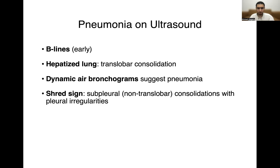There's another sign I want to introduce, called the shred sign, which is actually characteristic of pneumonia. The shred sign is when you see subpleural consolidations with pleural irregularities. The key word here is pleural irregularities. When you look at the pleura and it is jagged and irregular — not clean and thin and smooth — that gives away the shred sign. This indicates subpleural consolidation, or what we call non-translobar consolidation.